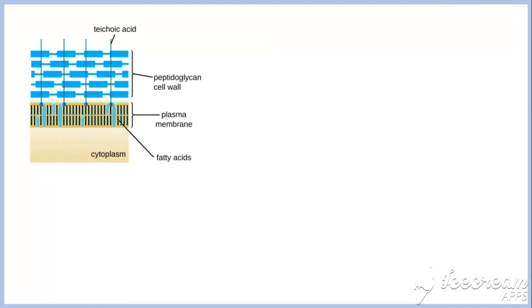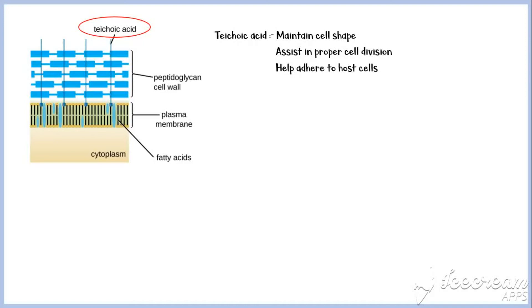Gram-positive cell walls also contain chains of teichoic acid that extend from the plasma membrane through the peptidoglycan cell wall. These sugar-containing polymers assist in maintaining cell shape and play a role in proper cell division. And most importantly, teichoic acid helps some gram-positive bacteria to adhere to host cells and cause infection.